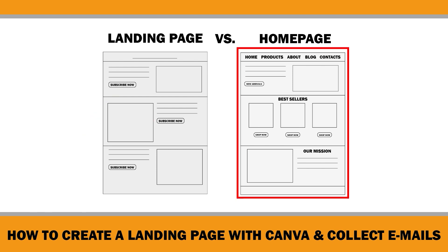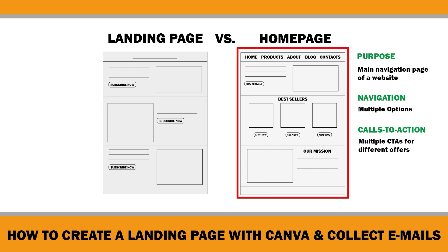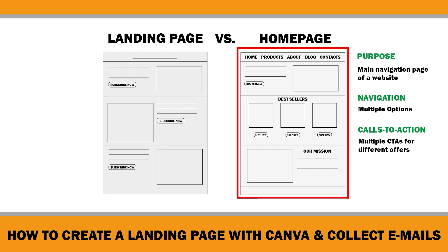On the other hand, a home page is the main navigation page of a website. There is often a navigational menu at the top and a footer at the bottom. It may include links to other pages on the website, such as product pages, contact pages, about pages, or blog post pages.